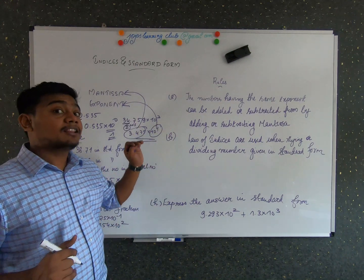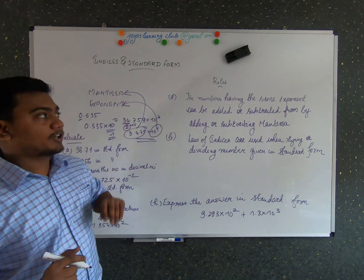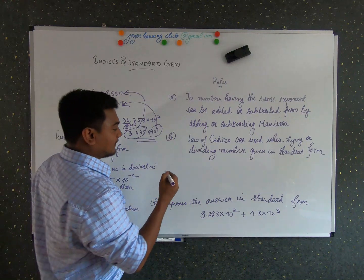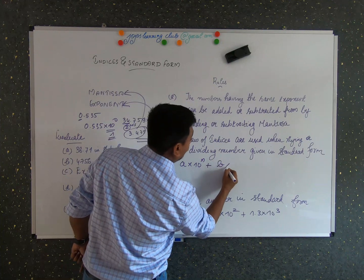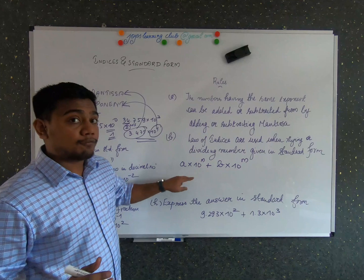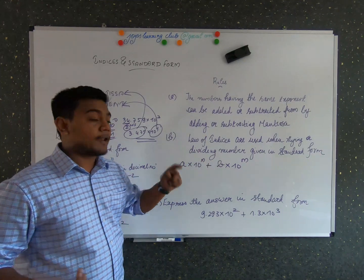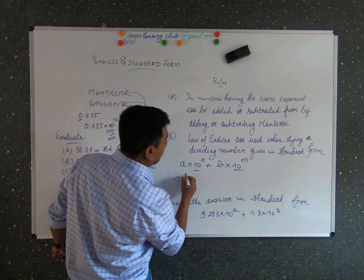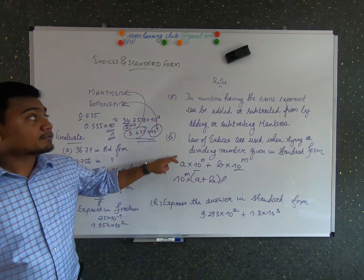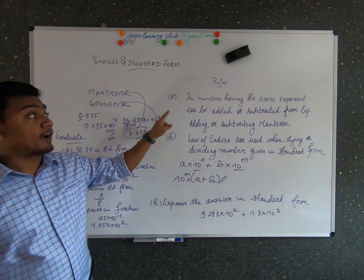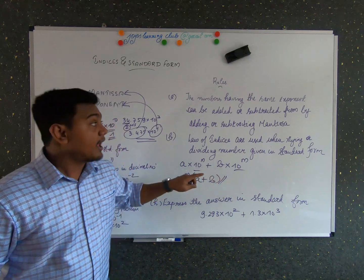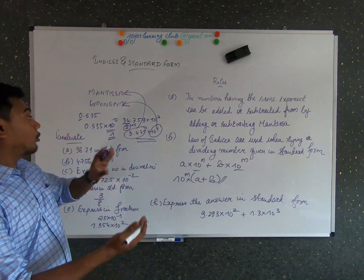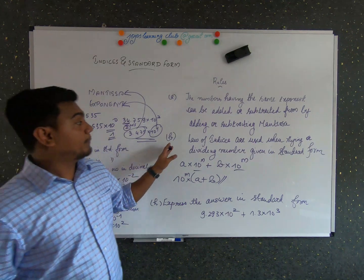There are certain rules using the law of indices for writing in standard form. Rule number one: numbers having the same exponent can be added or subtracted by adding or subtracting their mantissas. That is, a × 10^m + b × 10^m — since both have the same exponent 10^m — you can group them and calculate a + b. The same rule applies for subtraction.